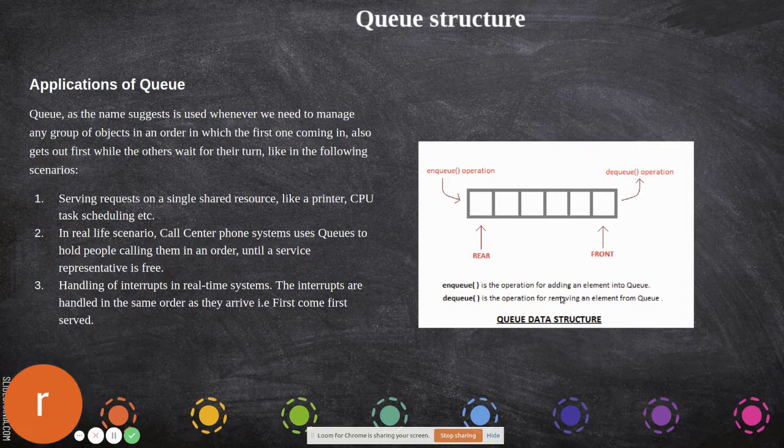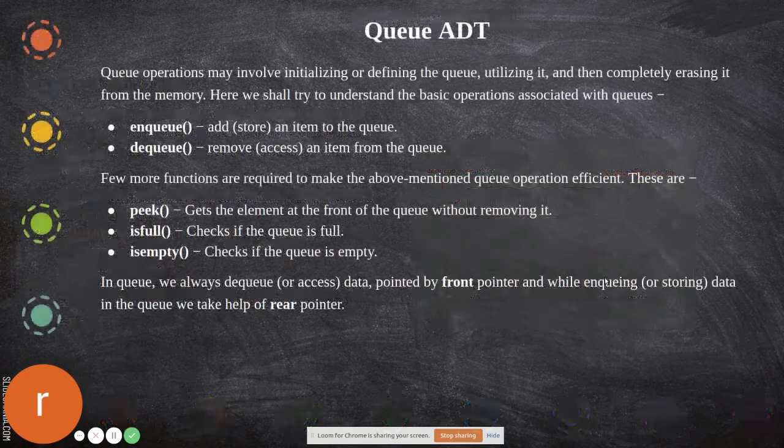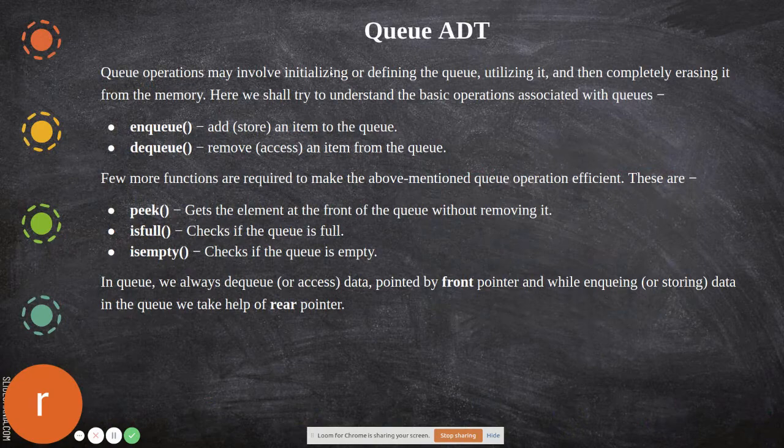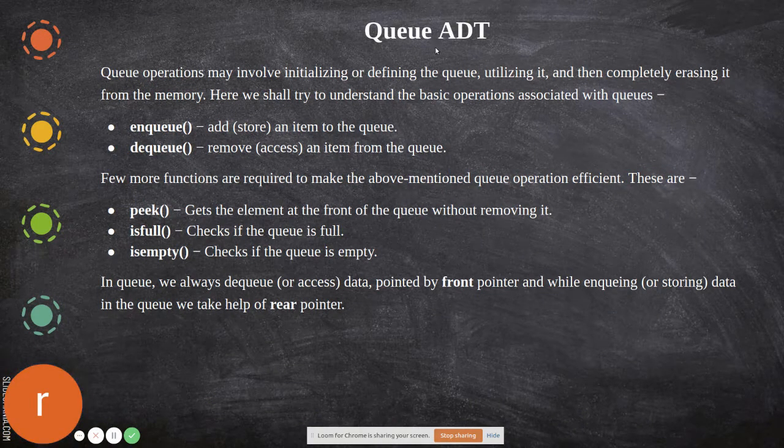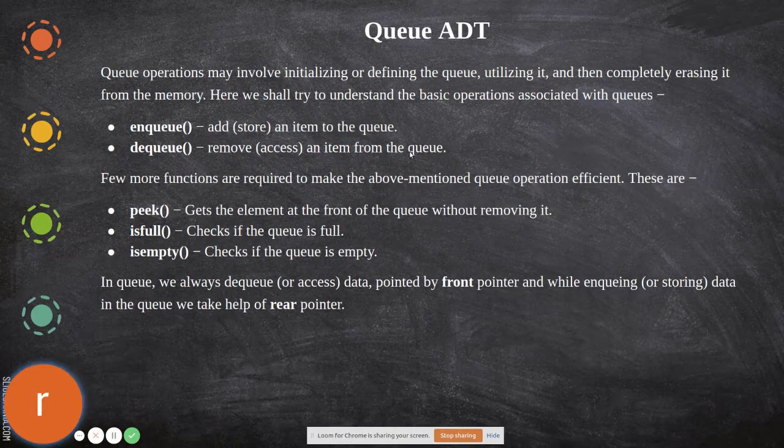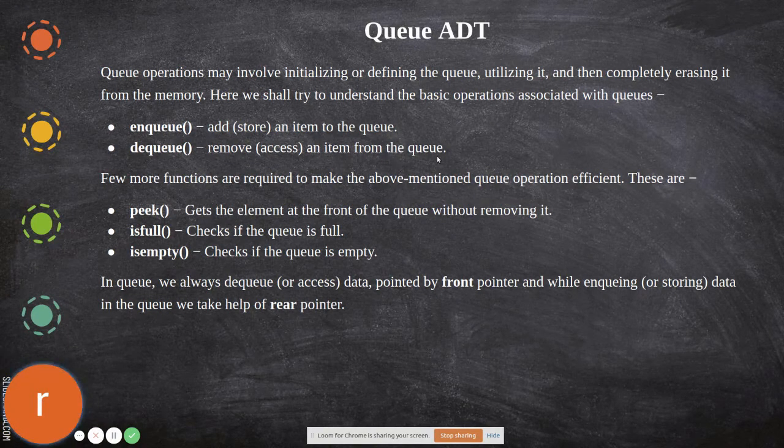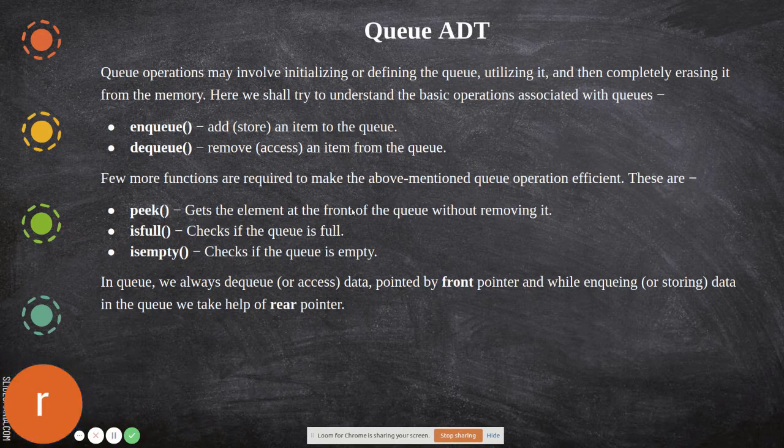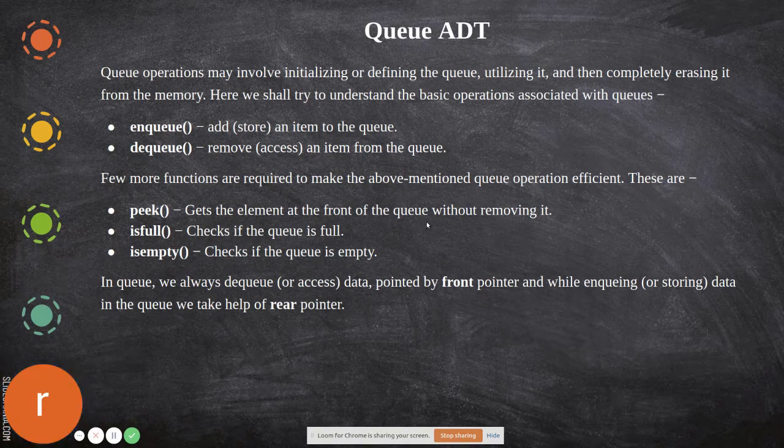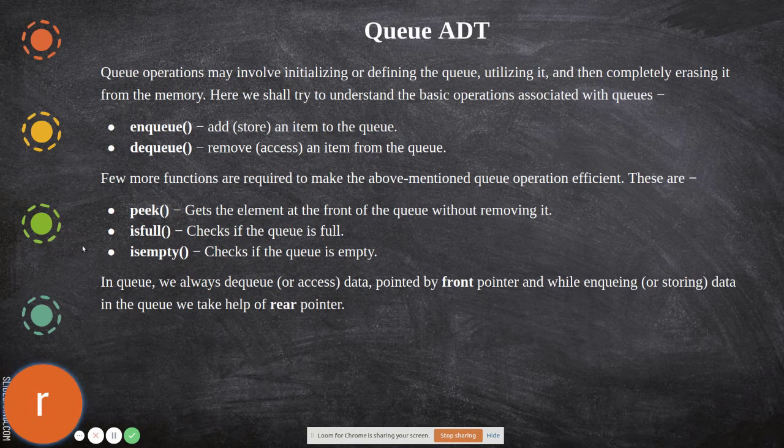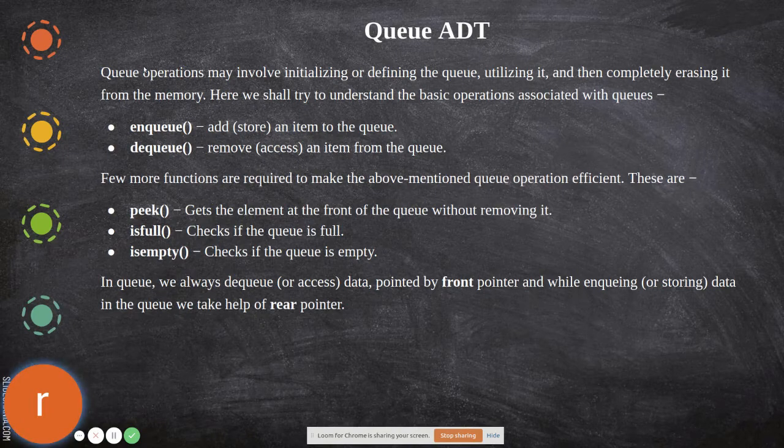These are all the abstract data structure operations - the functions you can perform in a queue. Enqueue is add, dequeue is removal, and peek is to access the first element at the front without removing it. These are the functions we are going to implement in our queue mechanism.